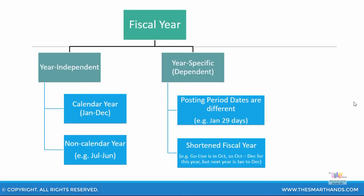When you proceed to create your fiscal year variant in the system, you will see two different options. One is called year independent and the other one is year dependent or year specific. Year independent is the most commonly used one — 99% of the time you will be using the year independent setting. Year independent can be two options: either calendar year from January to December, or non-calendar year like July to June, April to March and so on.